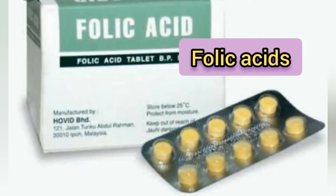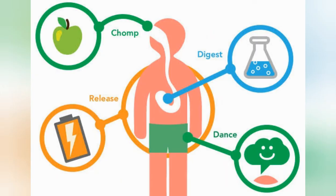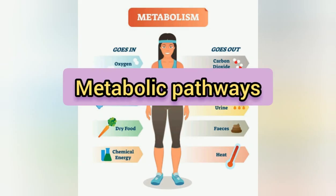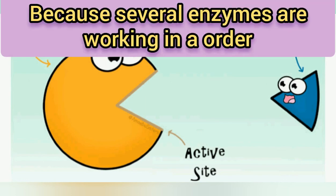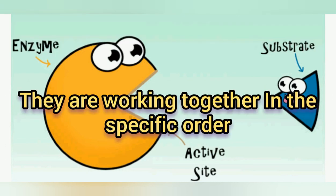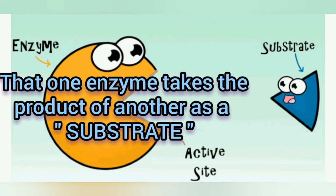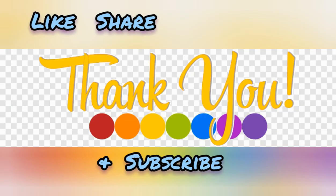There are several cycles and metabolic pathways taking place inside our body. The product produced by one enzyme is taken by another reaction as a substrate, and the pathway continues. Several enzymes work in order — each enzyme takes the product of another as its substrate. That is all about the characteristics of enzymes.